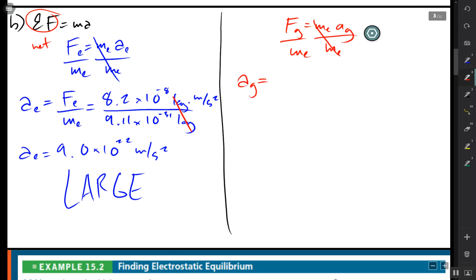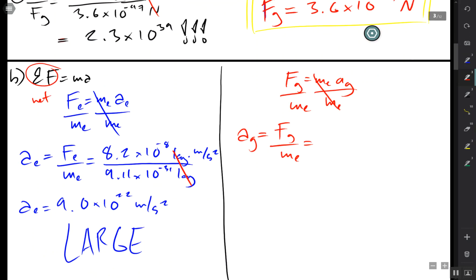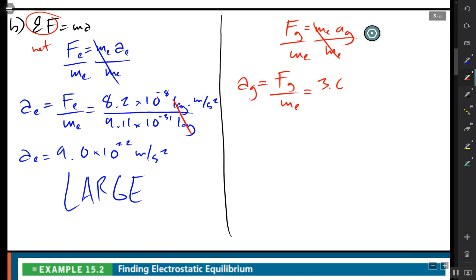Same thing. Acceleration due to gravity. Same mass of the electron but here we have, I'm just going to spell out the units for the newtons. That cancels out for the units of acceleration and we get.